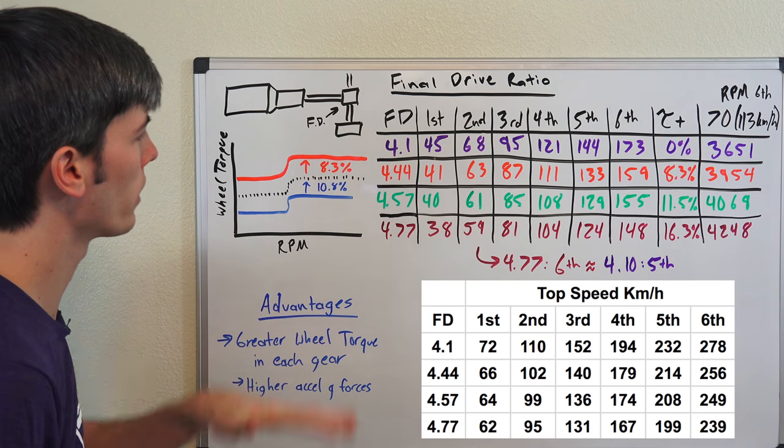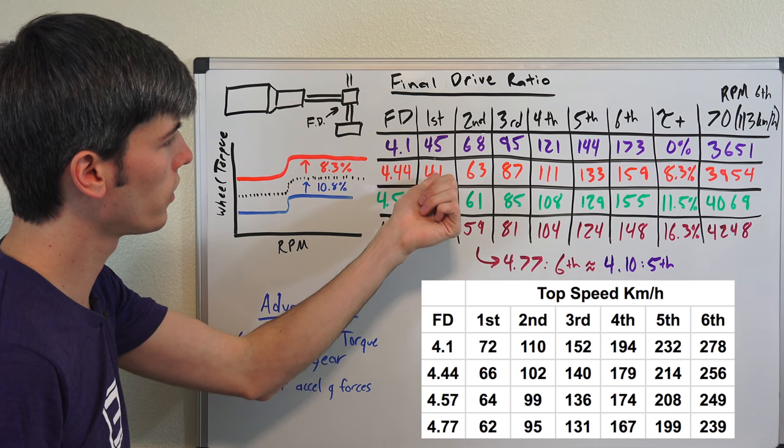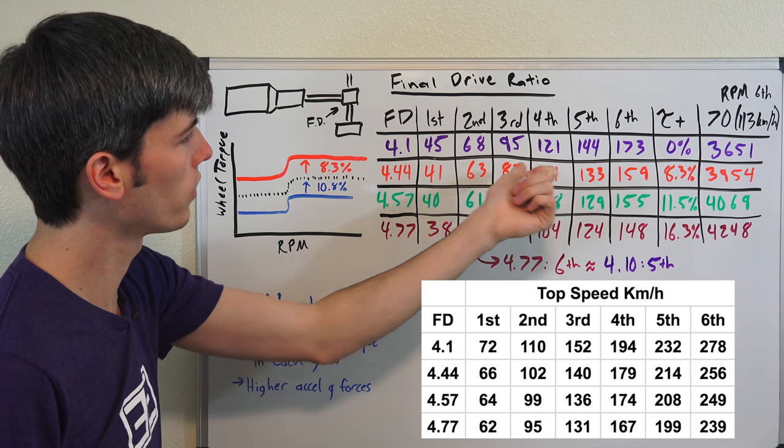So if we were to change that final drive ratio to a higher number, for example of 4.44, you can see that the top speed will drop in each of these scenarios.